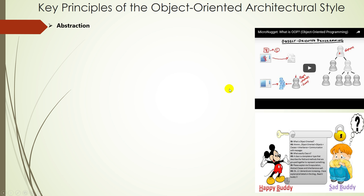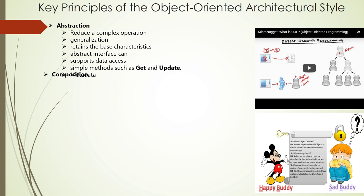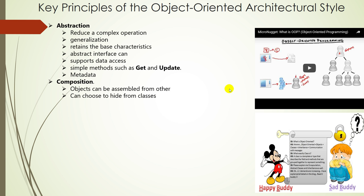Abstraction allows you to reduce a complex operation into a generalization that retains the base characteristics of the operation. For example, an abstract interface can be a well-known definition that supports data access using simple methods such as get and update. Another form of abstraction could be metadata used to provide a mapping between two formats that hold structured data. Composition objects can be assembled from other objects and can hide these internal objects from other classes or expose them as simple interfaces.